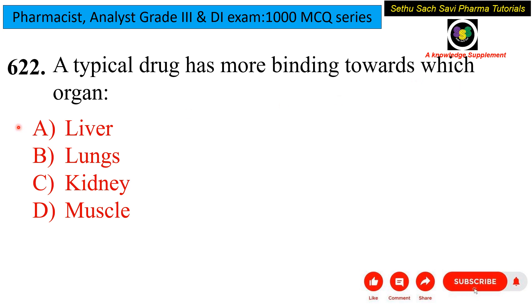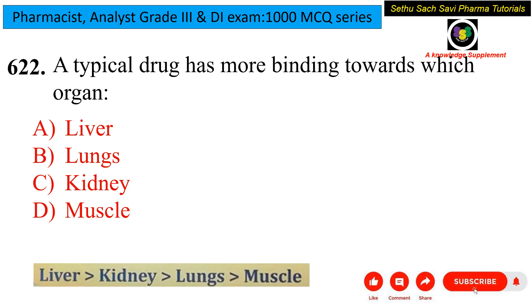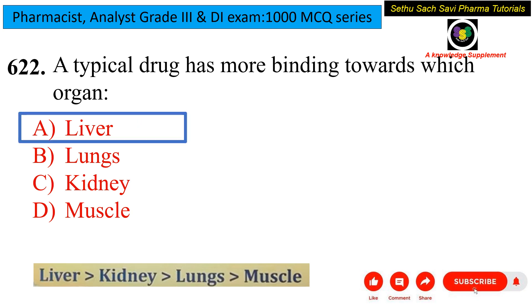Next question: a typical drug has more binding towards which organ? Options are liver, lungs, kidney, or muscle. The order is: liver has the highest drug binding, then kidney, then lungs, and lastly muscles. Liver has the highest binding because it has extensive blood circulation and is the main organ where drug metabolism occurs.